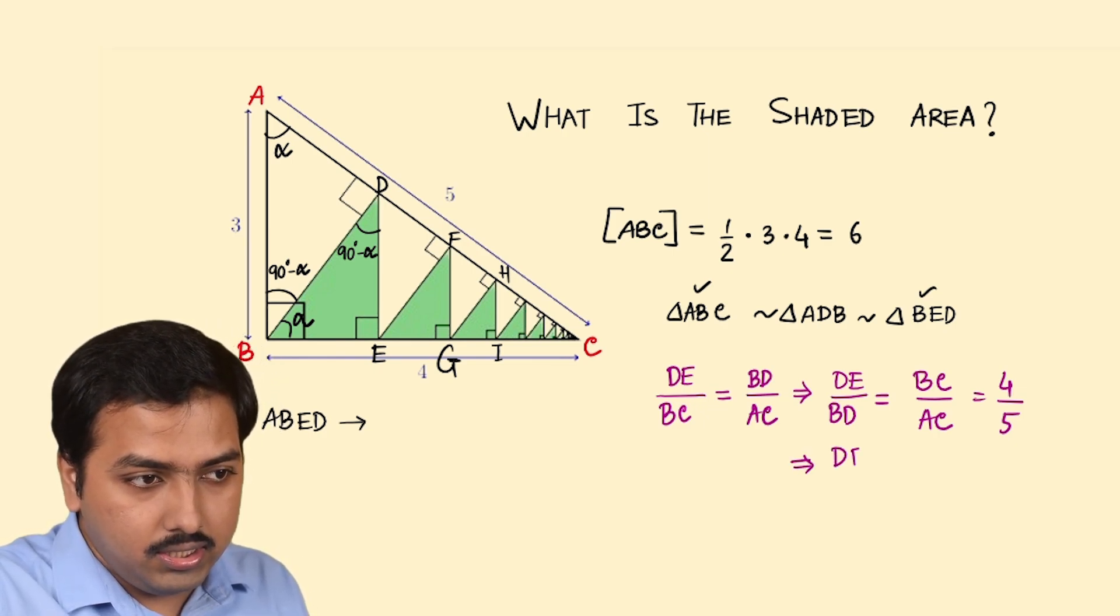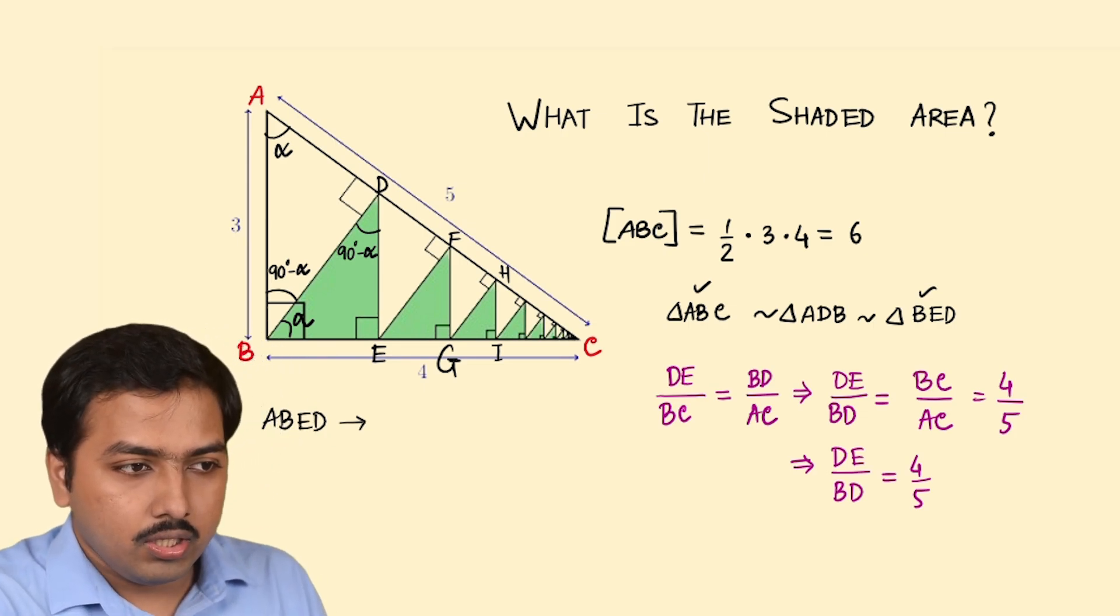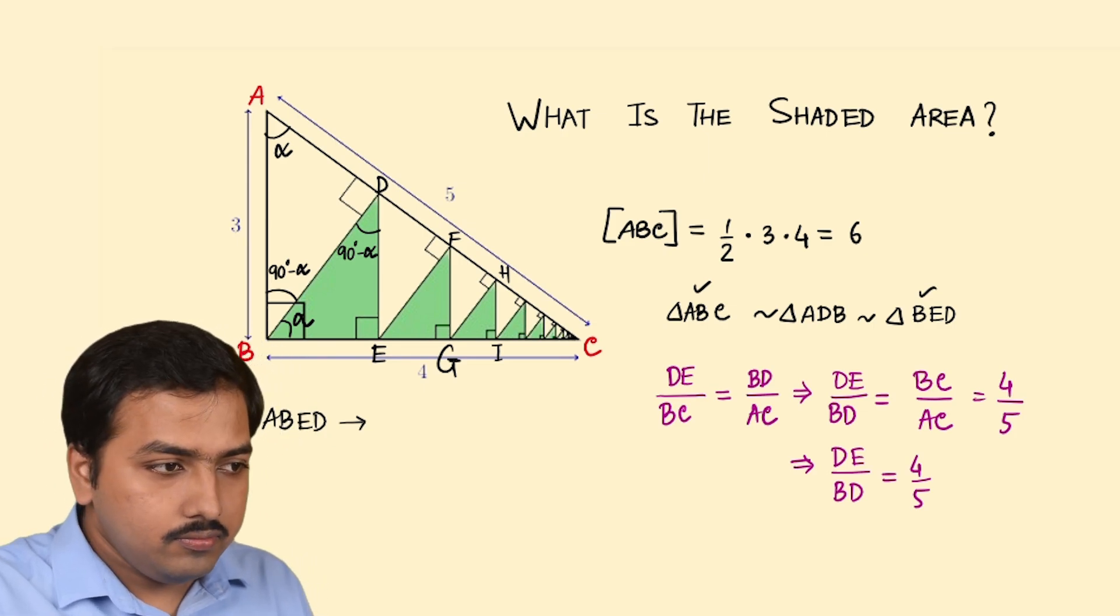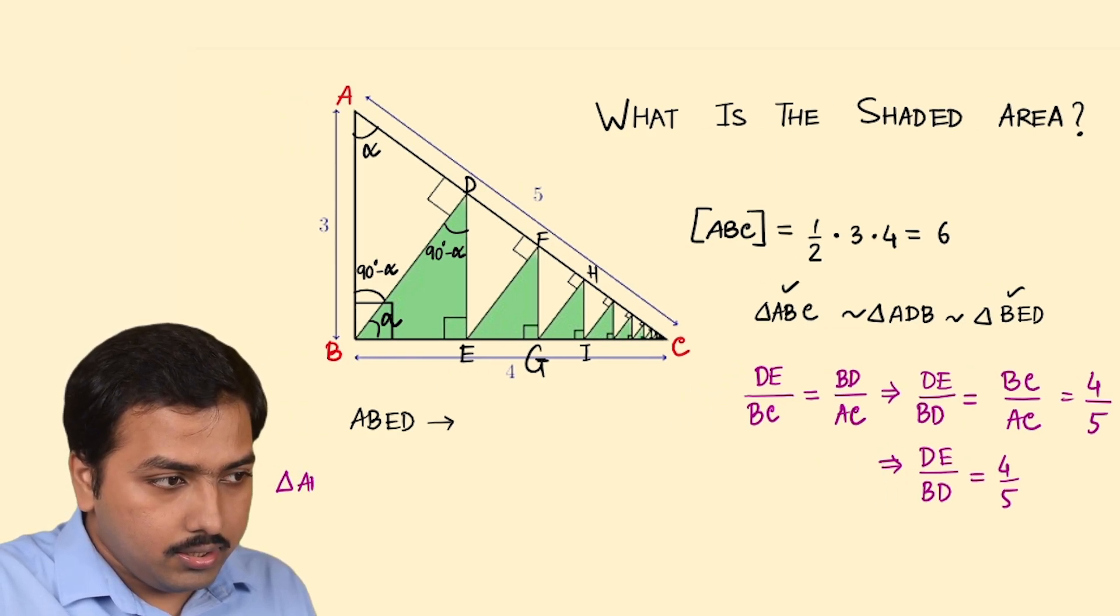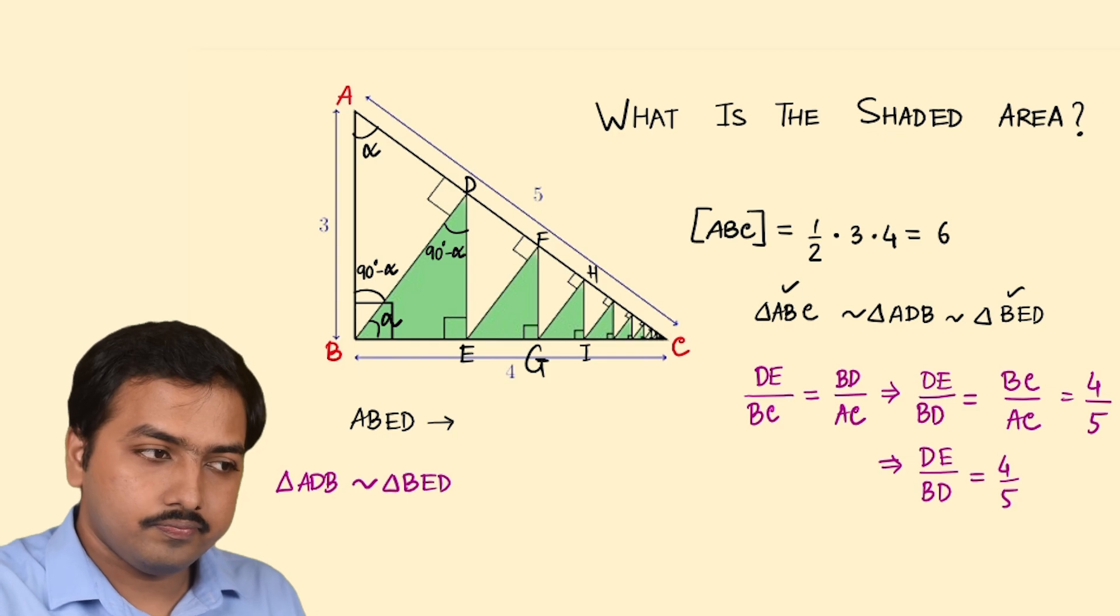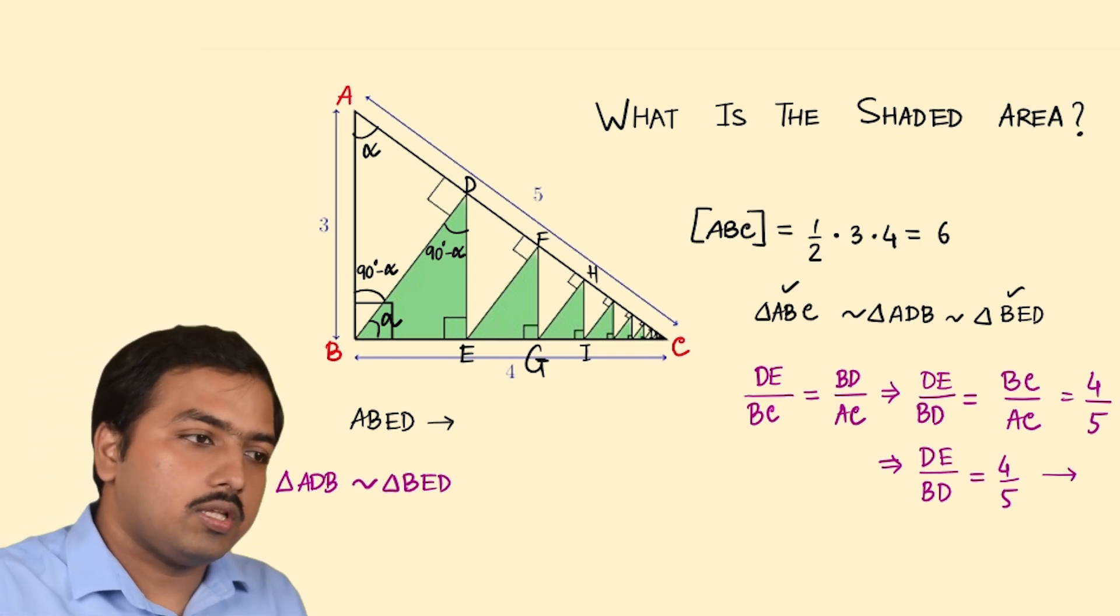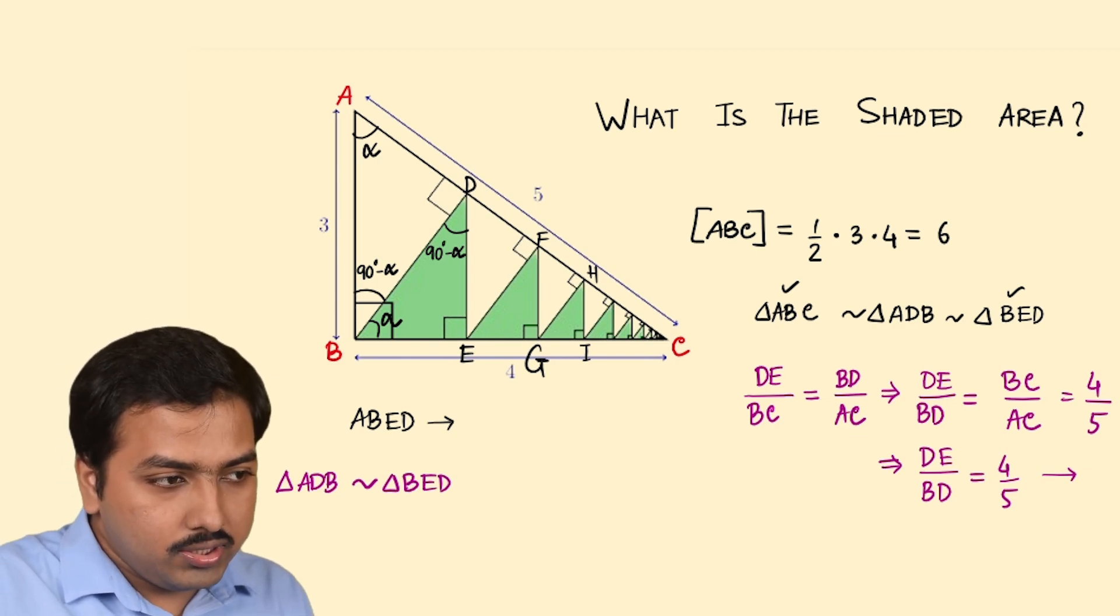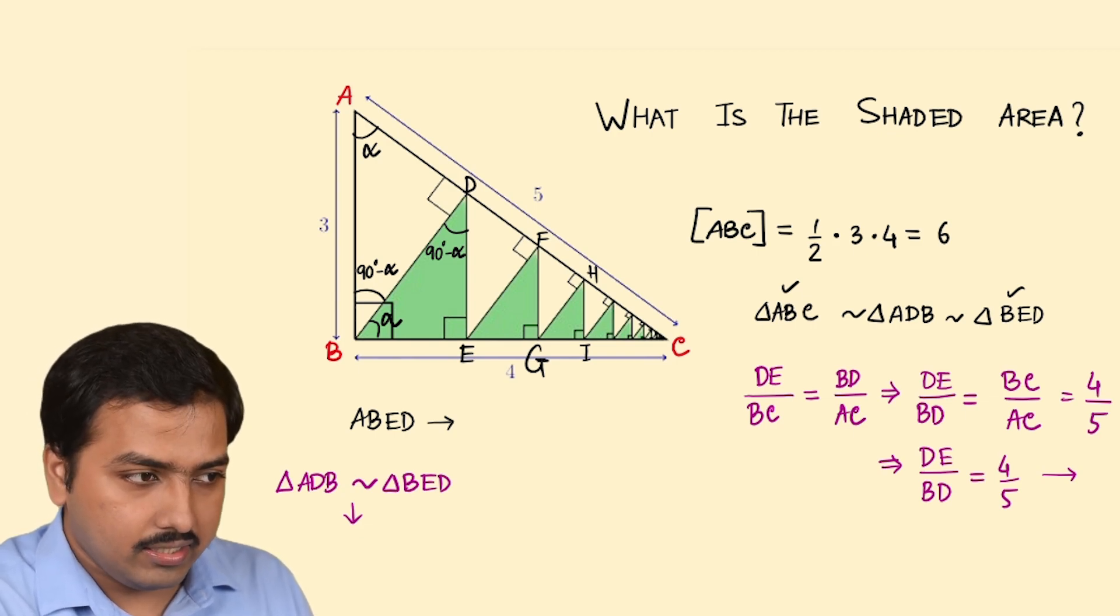So DE upon BD is 4 upon 5. Okay, something you can get right now. Now we also have triangle ADB is similar to triangle BAE and we already have this relation.